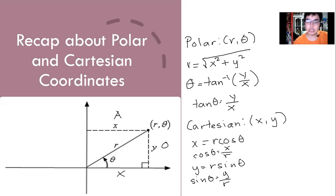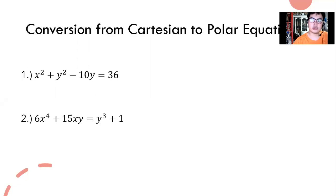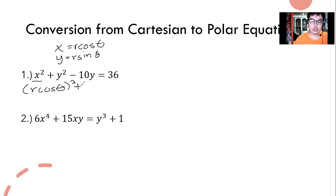These are the useful formulas we can use to convert. So now, we have the given Cartesian equations — they have x and y. We're going to recall that x is r cosine theta and y is r sine theta. These are the most basic tools to convert to polar. What we're going to do is substitute x with r cosine theta, and do the same for y with r sine theta.